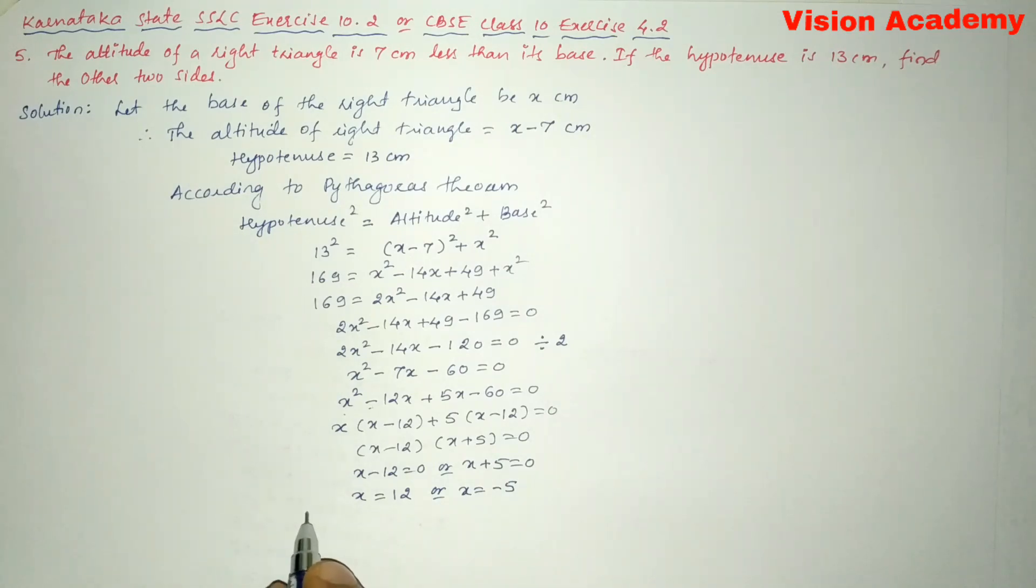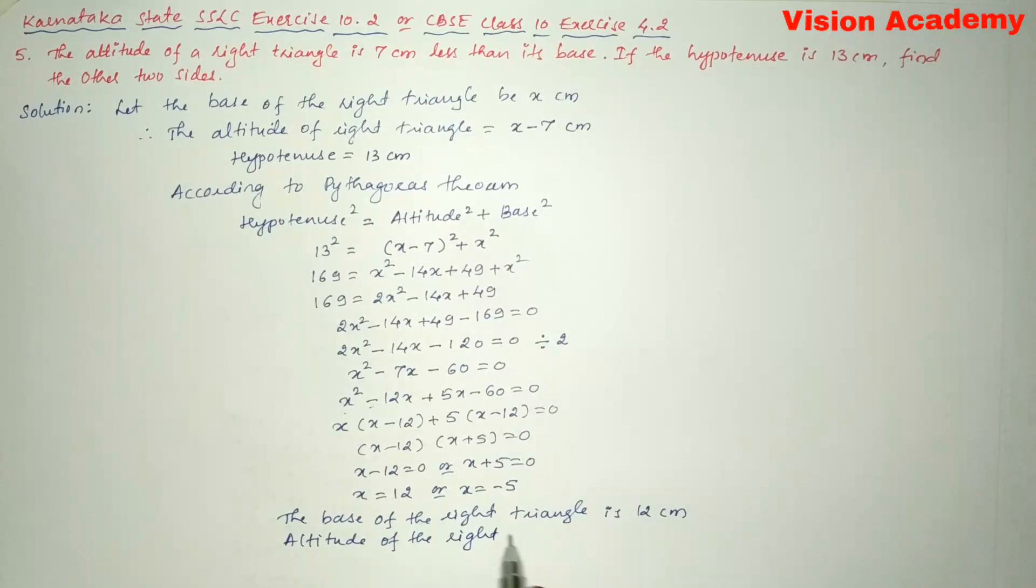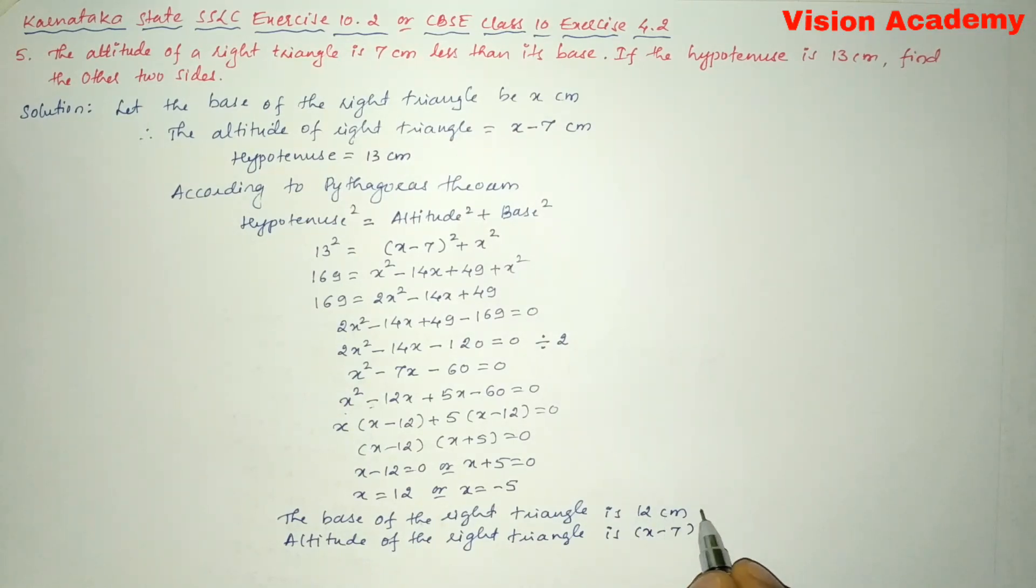Here we can write the base of the right triangle is 12 cm. Next we will write altitude of the right triangle is x minus 7, so that is x is now 12, this implies 12 minus 7, so this gives us 5 cm.